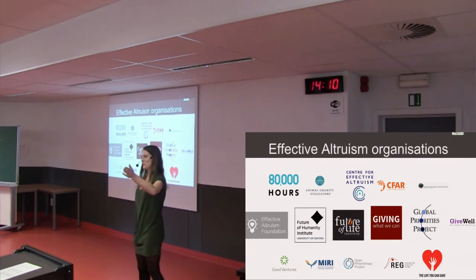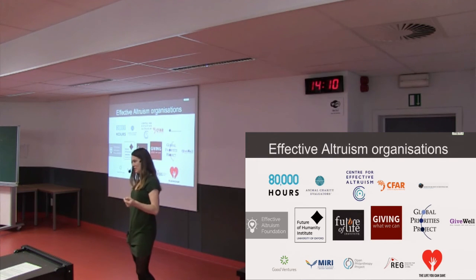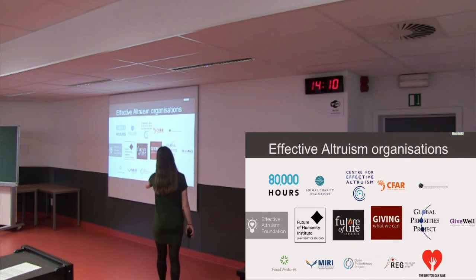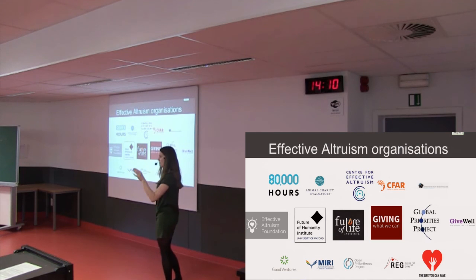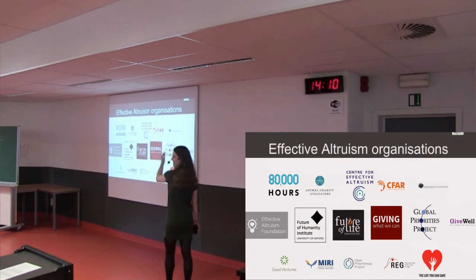Then, we have Giving What We Can, which Sam will talk about, which is community of people who commit to donating 10% of their income to the very best causes that we find. And then, we have a lot of different research organisations as well, who look at particular areas where they think they can find really great opportunities and figure out how to compare them against others. So, you can look into some of those later.